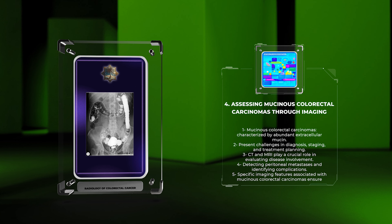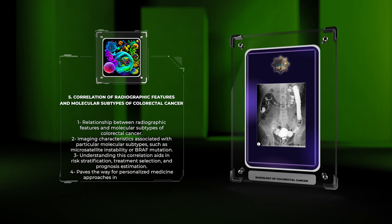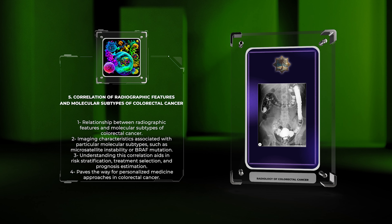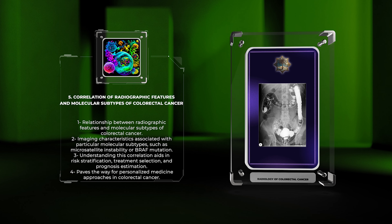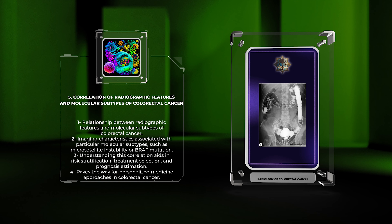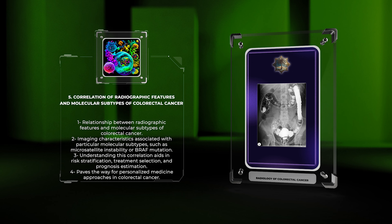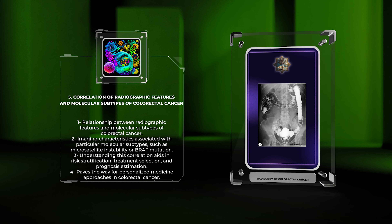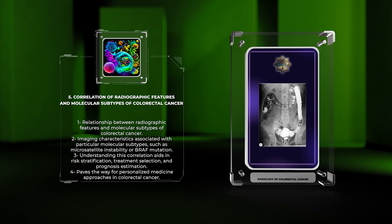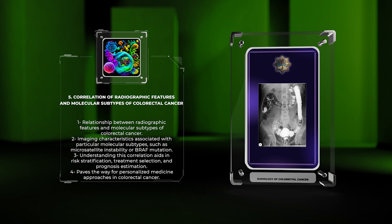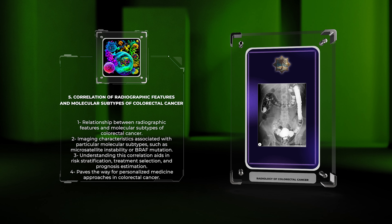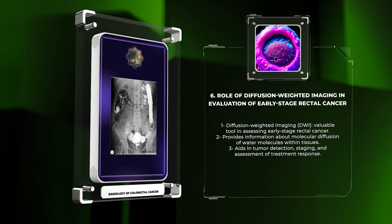Recent studies have highlighted the relationship between radiographic features and molecular subtypes of colorectal cancer. Certain imaging characteristics such as tumor location, growth pattern, and enhancement patterns on CT or MRI have been associated with particular molecular subtypes such as microsatellite instability or BRAF mutation. Understanding this correlation can aid in risk stratification, treatment selection, and prognosis estimation, paving the way for personalized medicine approaches in colorectal cancer.